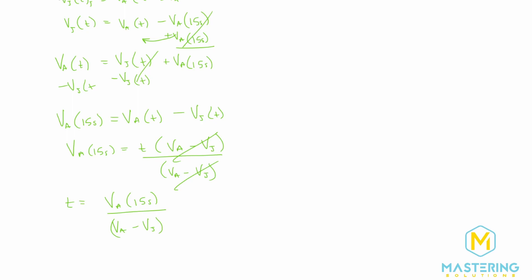When we plug in our numbers to this, we have Alyssa's speed, which we said was 4 meters per second, and we'll multiply that by 15 seconds. If we divide all of that by Alyssa's speed, again 4 meters per second, minus Jenny's speed, which is 3.8 meters per second, will give us the time.